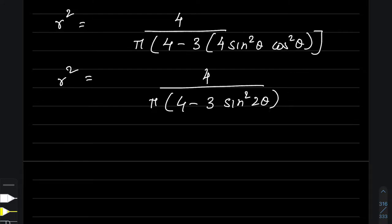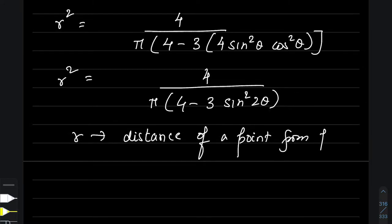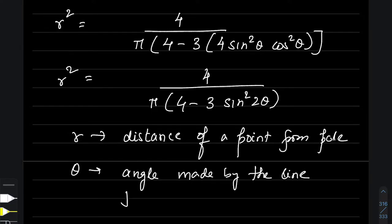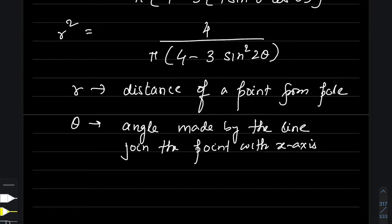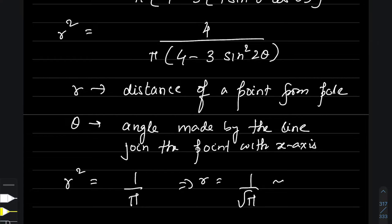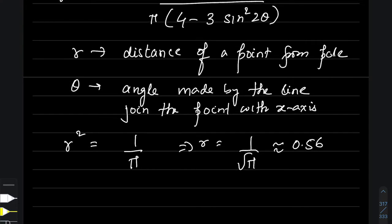Now we need to plot this polar curve. Remember: r represents the distance of a point on the curve from the origin (the pole), and θ is the angle the line joining that point makes with the x-axis. When θ = 0, r² = 1/π, so r = 1/√π ≈ 0.56.